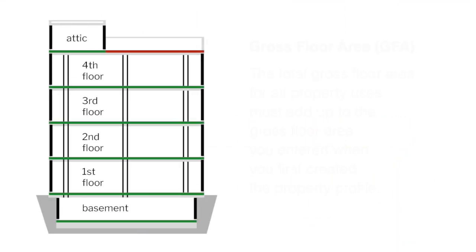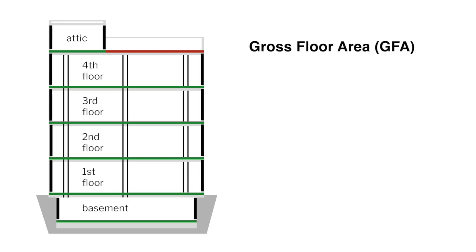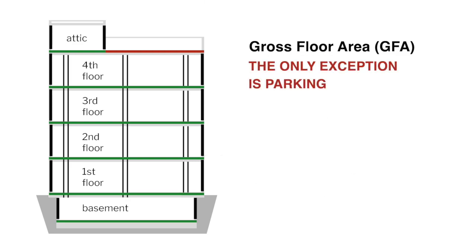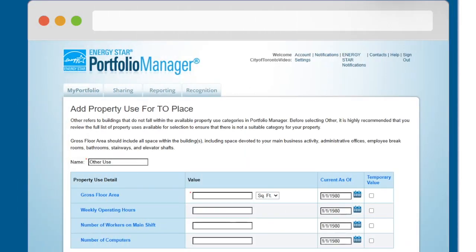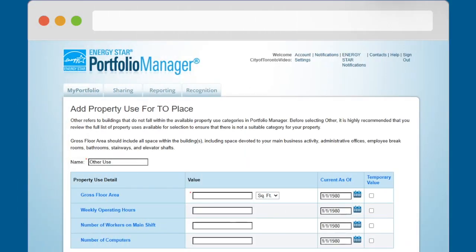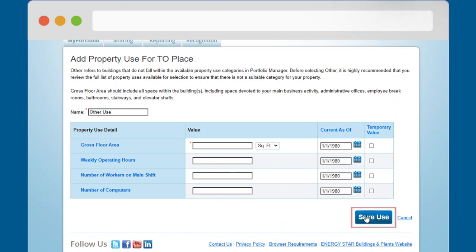Remember, the total gross floor area for all property uses must add up to the gross floor area you entered when you first created the property profile. The only exception is parking, as the area for parking is calculated separately and in addition to the gross floor area of the property. When you have finished filling out the information on the Add Property Use page, scroll to the bottom of the page and click the Save Use button.